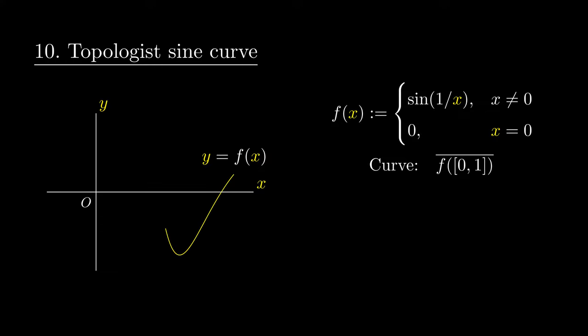The shape is really really really wiggly, and the curve is this idea called the closure of the graph. That's not too important for now.